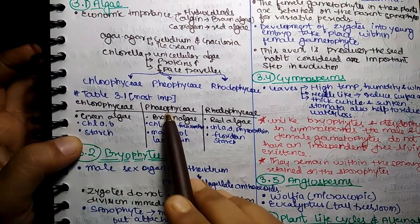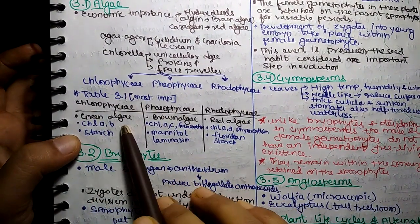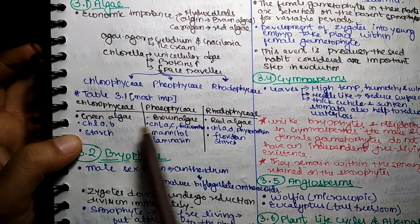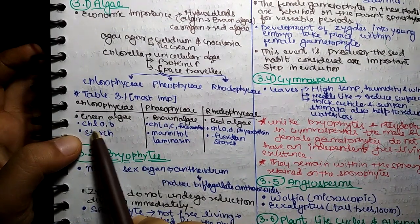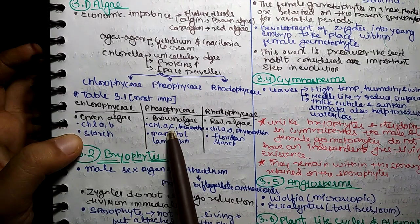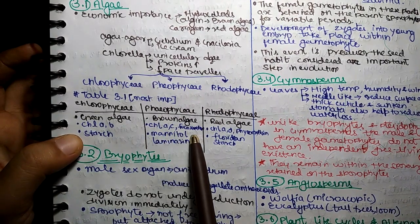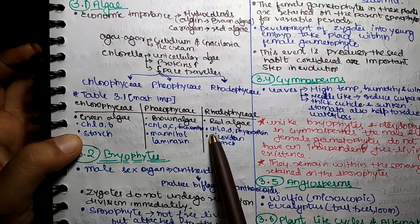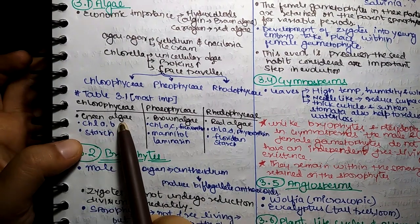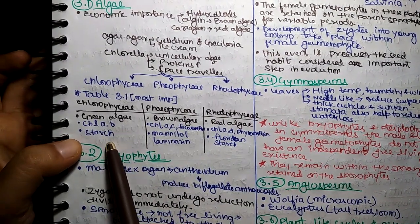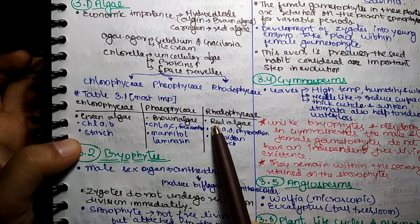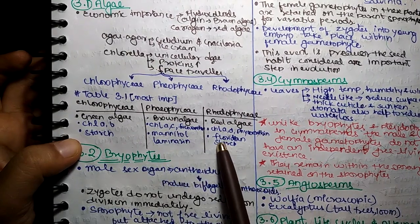Chlorophyceae is green algae, Phaeophyceae is brown algae, and Rhodophyceae is red algae. Chlorophyceae has Chlorophyll A and B. Brown algae has Chlorophyll A, C and Fucoxanthin. Red algae has Chlorophyll A, D and Phycoerythrin. In green algae, food is stored in the form of starch. In brown algae, as Mannitol and Laminarin. In red algae, as Floridian starch.